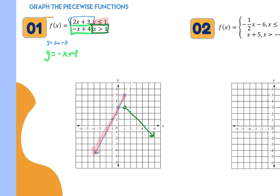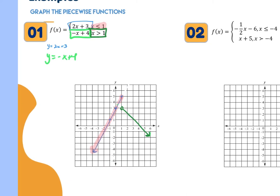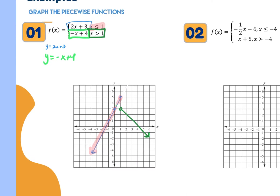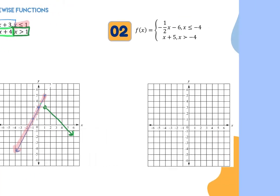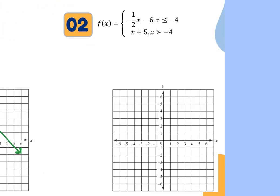The other way to graph piecewise functions is to plug in points. For lines I find it easy to just draw and erase, but for non-linear pieces it might be easier to plug in points. Start with the boundary value — for example, negative four — plug it into negative one half x minus 6: negative one half times negative four minus 6 equals positive 2 minus 6, which is negative 4. So the first coordinate point is negative 4, negative 4.